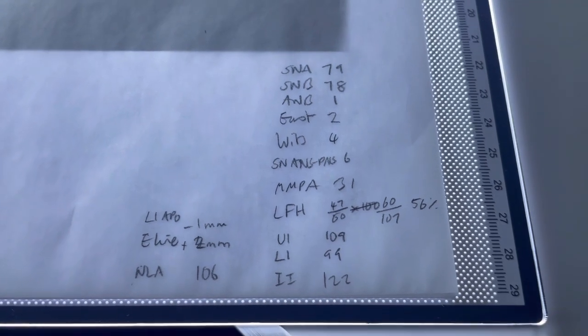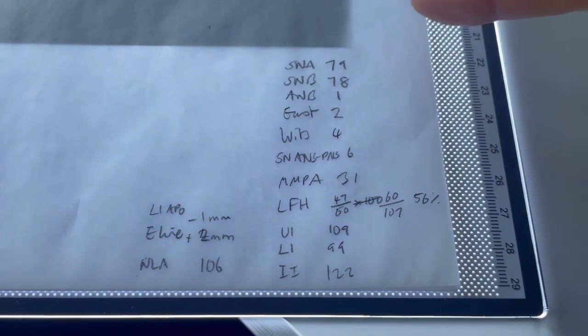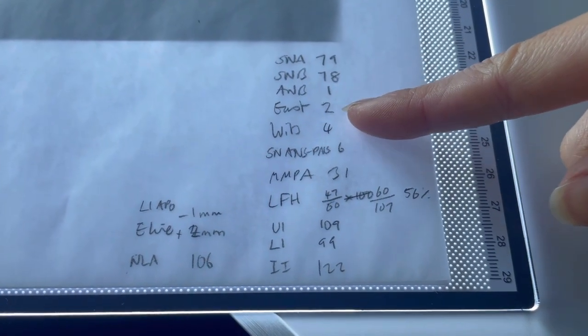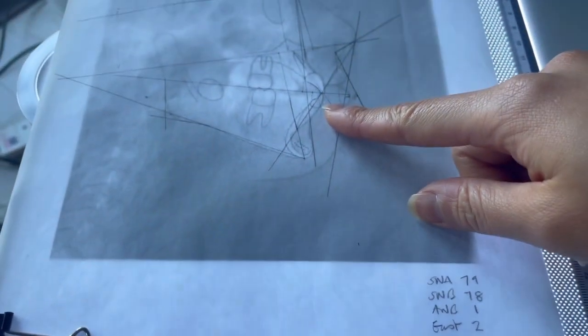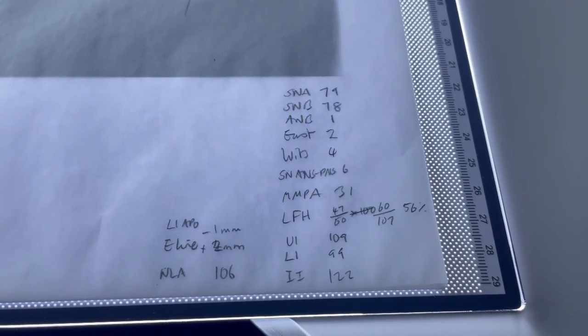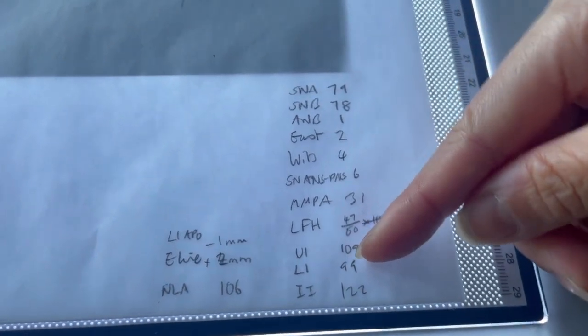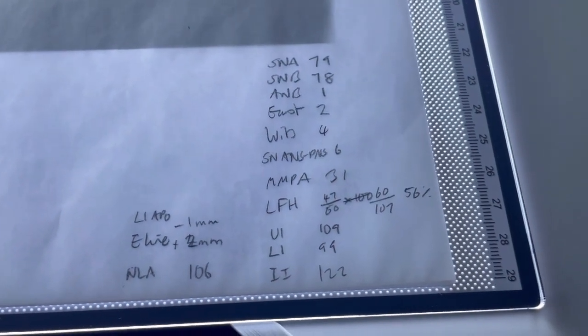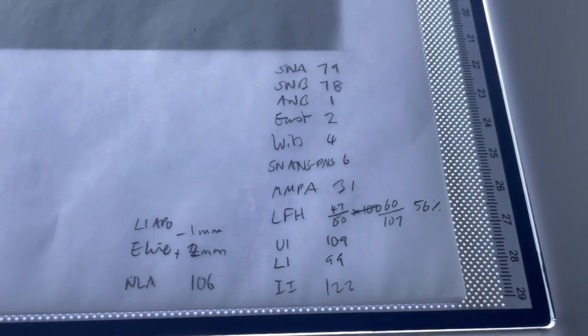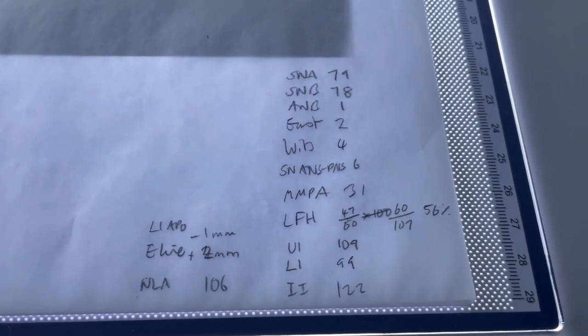At this point, I look at all these values and make sure, do these make sense to me? So is he kind of like a mild skeletal three, skeletal one? Yes, that's what I know. Wits, I think he's also slightly class three because the incisors are class three. Things like his lower facial height, that's almost within, slightly increased, but within normal values. His upper incisors, did they look normal clinically? Lower incisors were a little bit proclined. You always have to look at these values and make sure they match up with your clinical picture before you proceed.